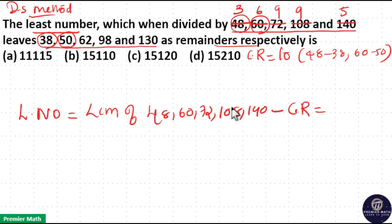So here digital sum of number equals LCM of digital sum of 3, 6, 9, 9 and 5 minus common remainder. Here LCM of 3, 6, 9, 9 and 5 should be 90. Digital sum should be 9. That is LCM of 3, 6, 9, 9 and 5 is 270. And common remainder is 10.